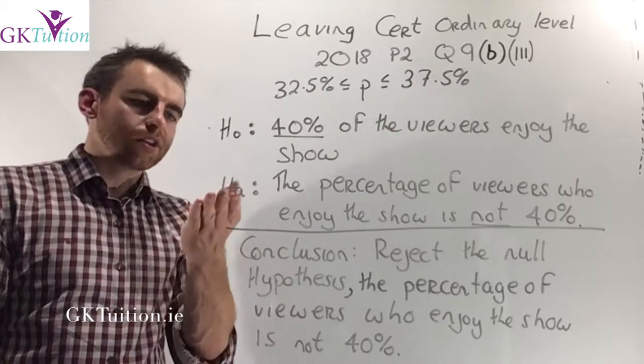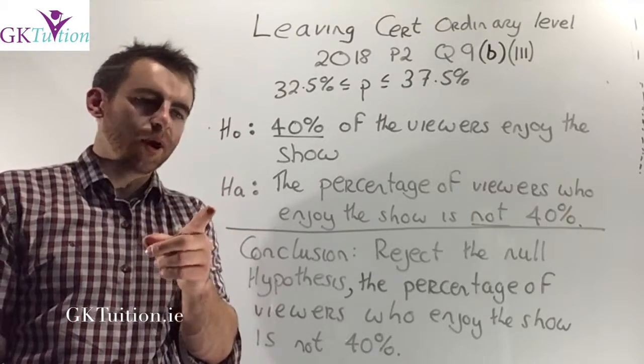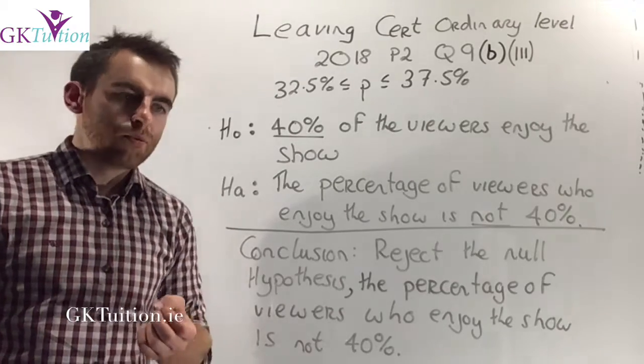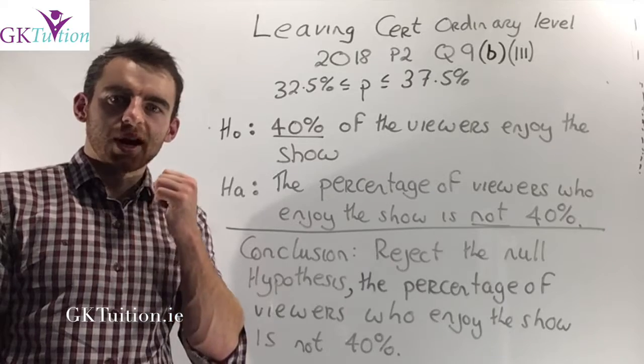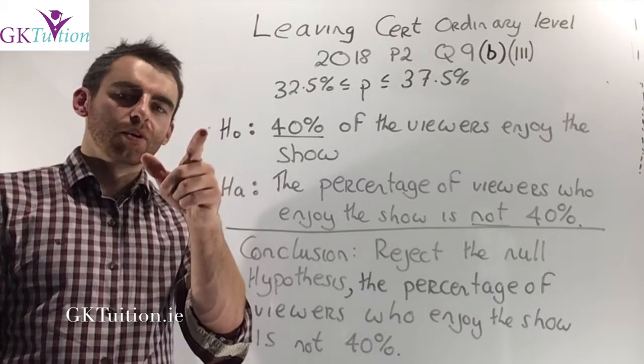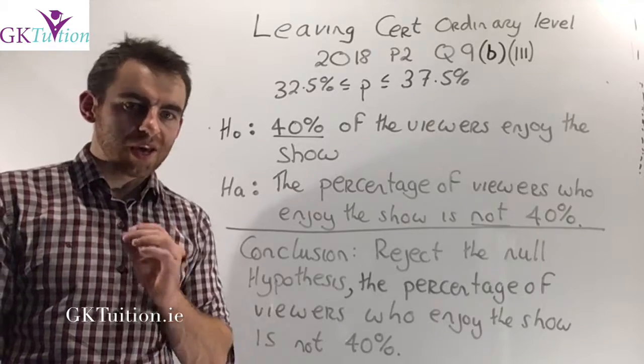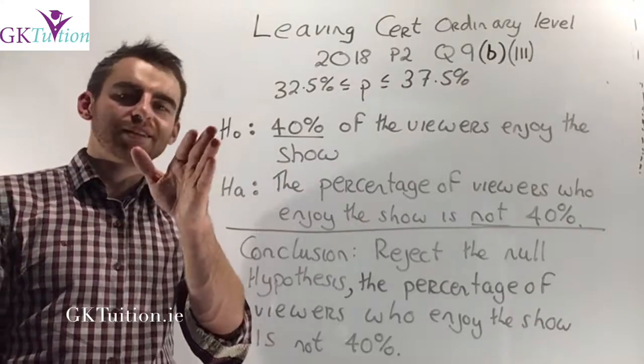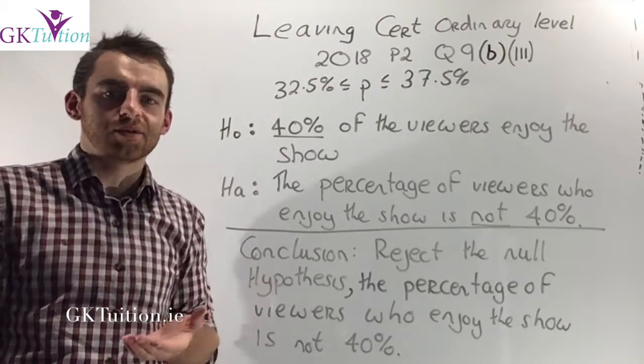On the other hand our alternative is the opposite of that. So our alternative hypothesis is that the percentage of viewers who enjoy the show is not 40%. Remember in a null hypothesis test, your two options are you either reject the null hypothesis or you fail to reject the null hypothesis. You cannot accept either one. I can either reject this or fail to reject it.